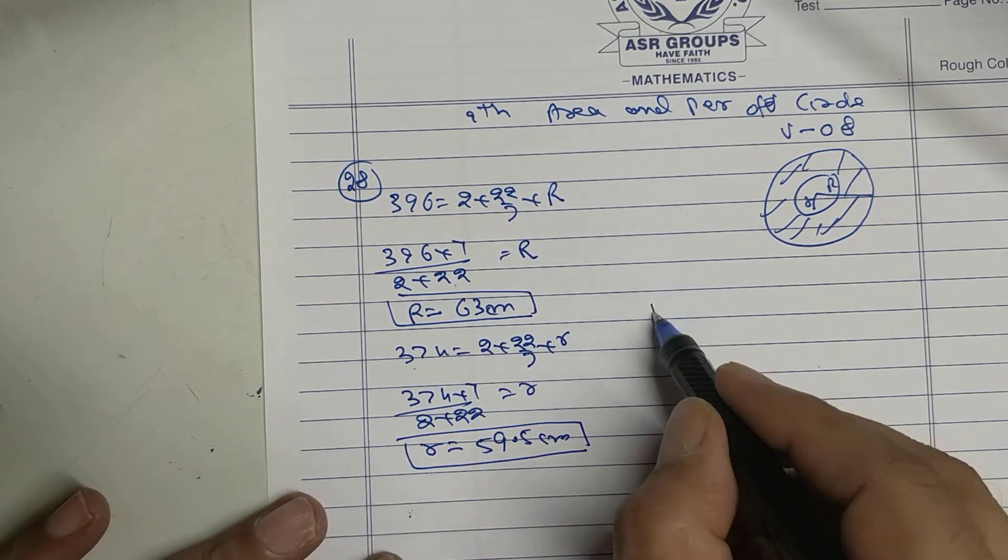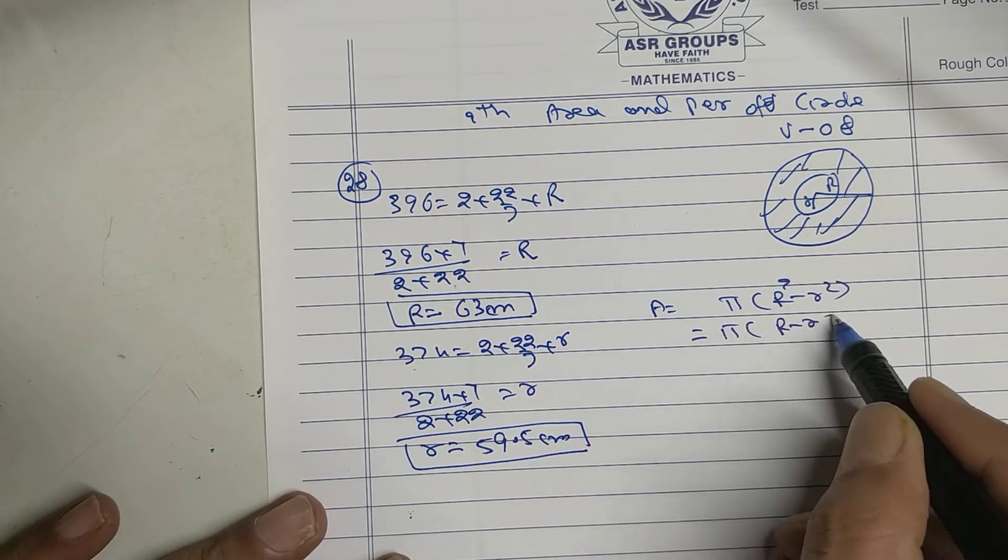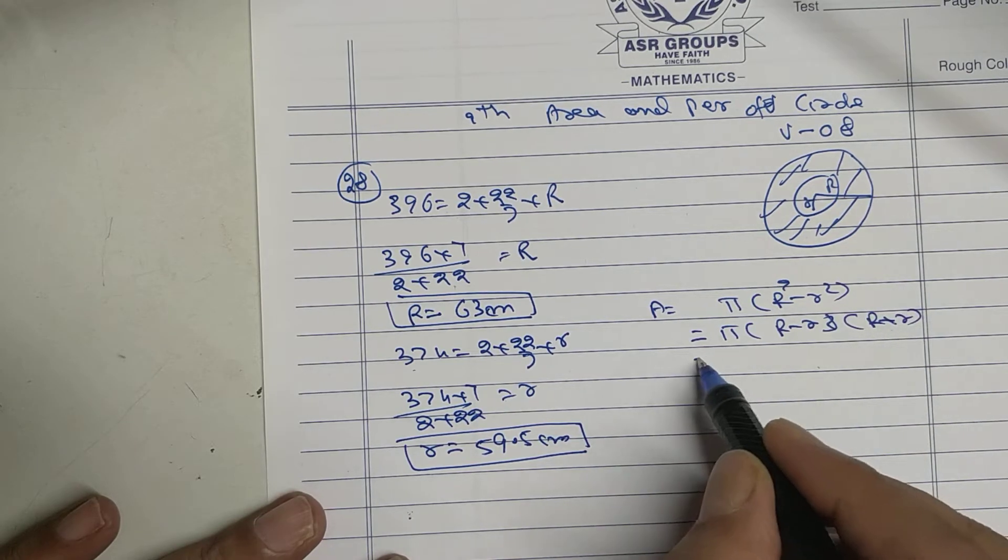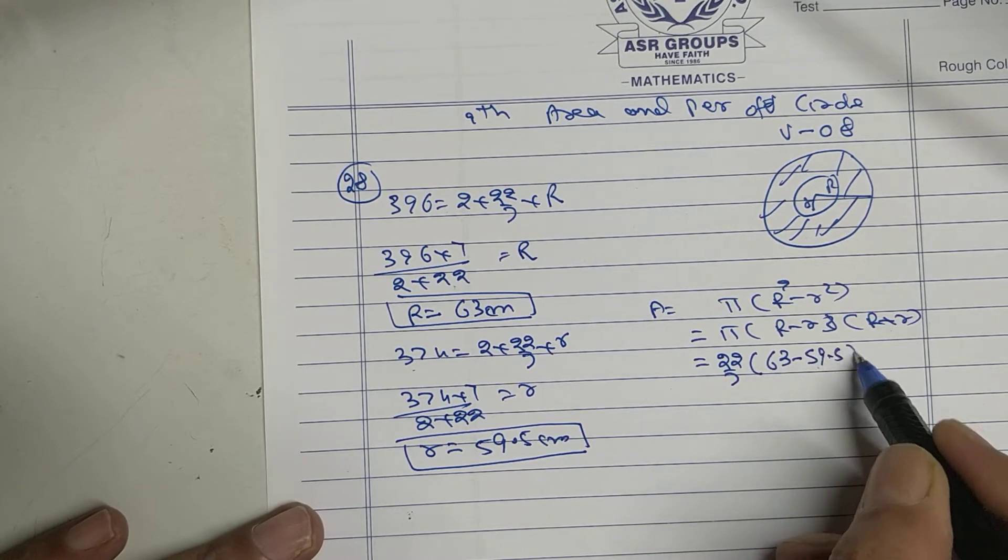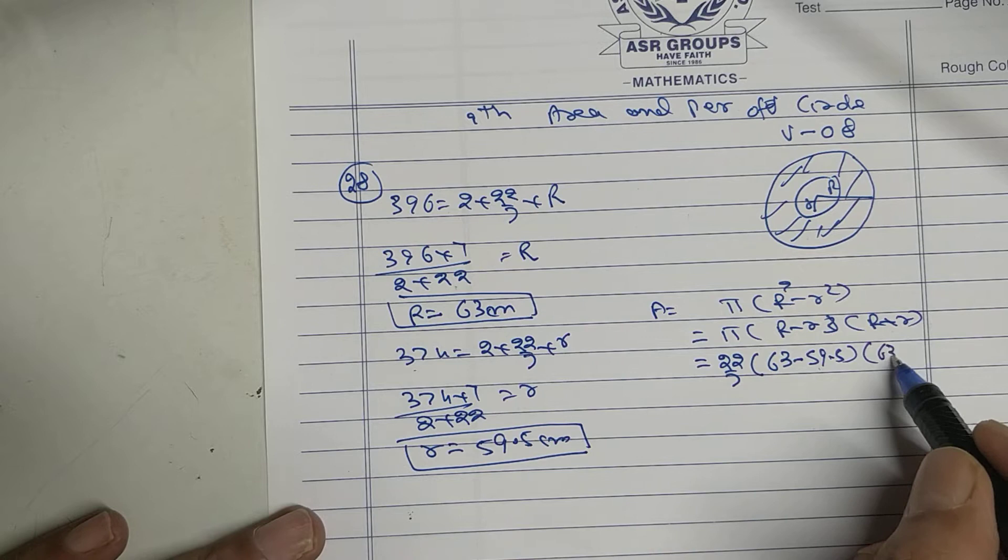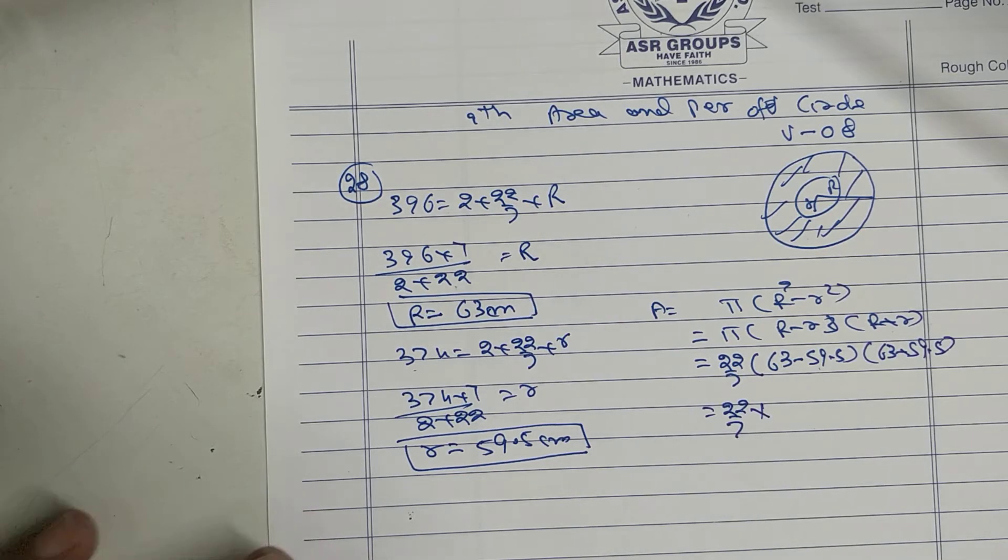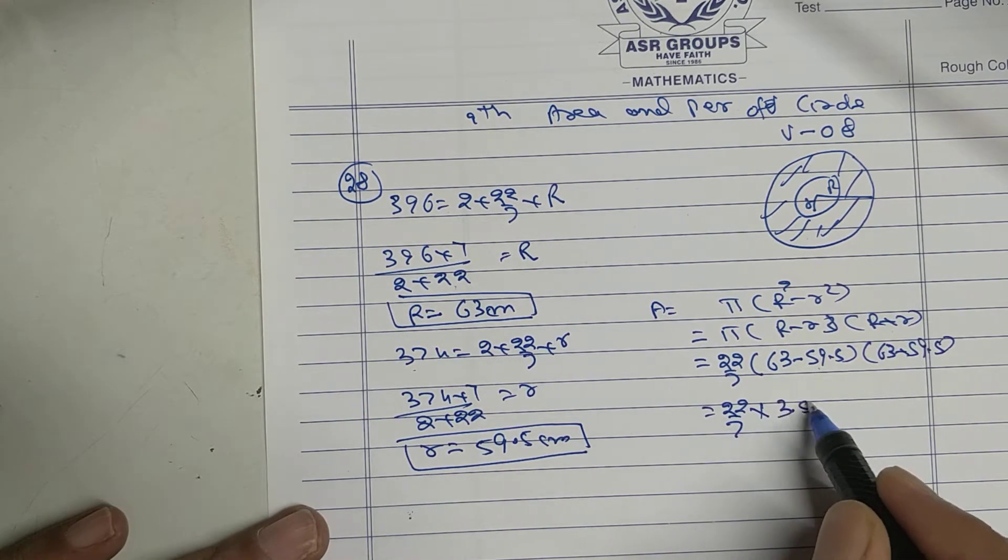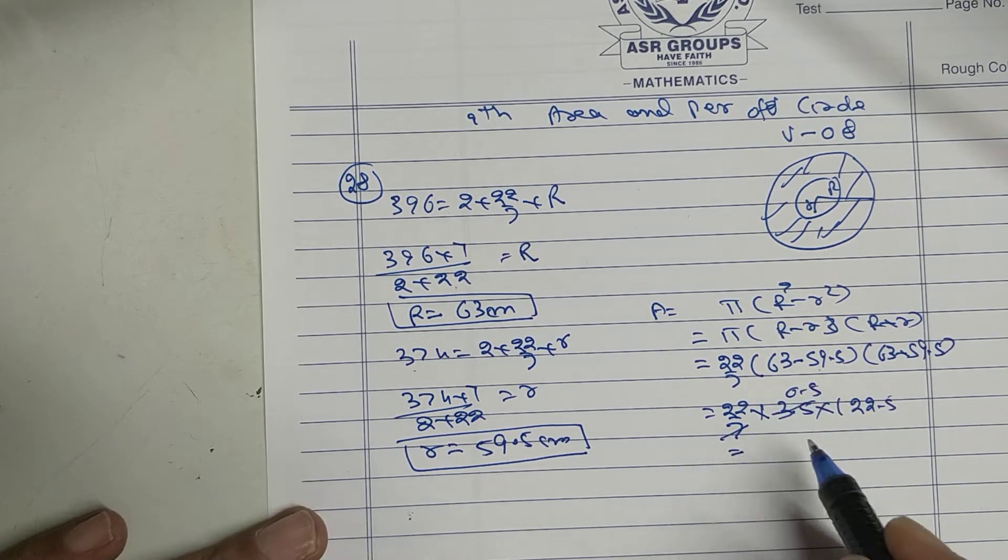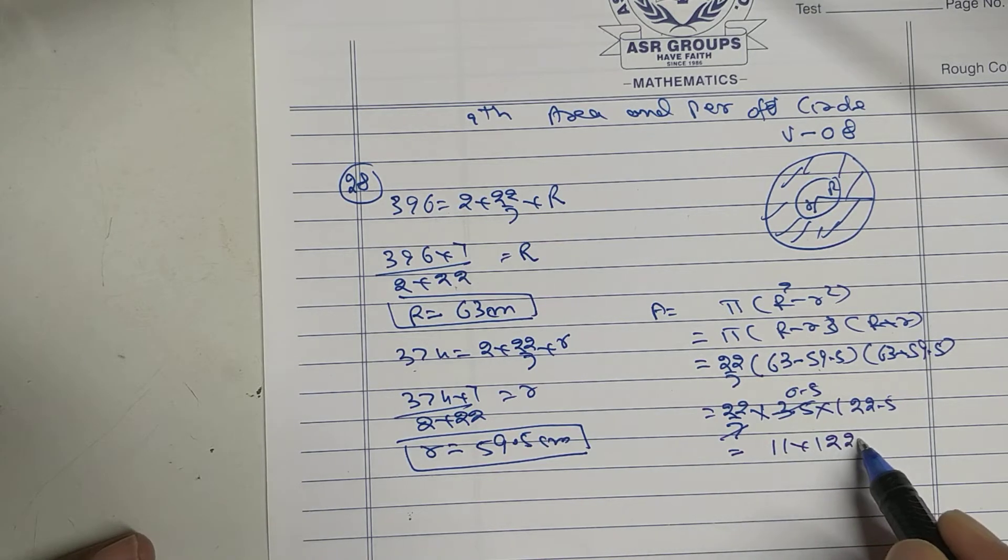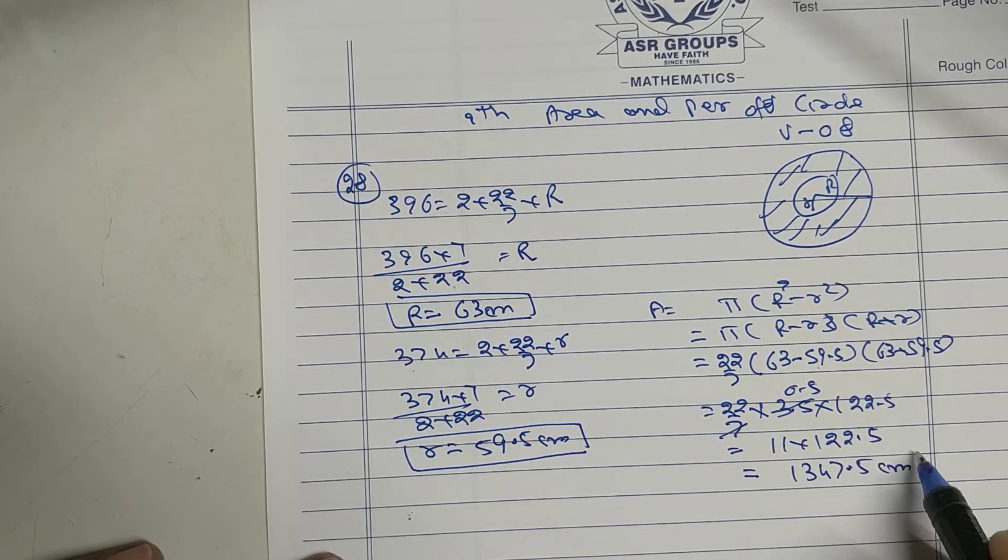Find the area: pi r square minus r square, r minus r, r plus r. 22 upon 7, 63 minus 59.5, 63 plus 59.5. This is 3.5 into 122.5. 22 into 0.5 is 11 into 122.5. Multiply: 1347.5 centimeter square.